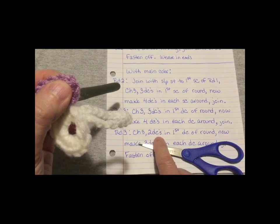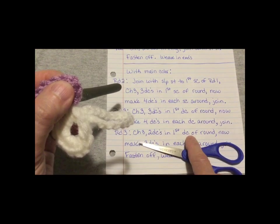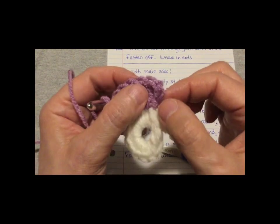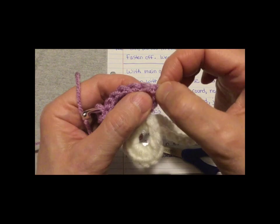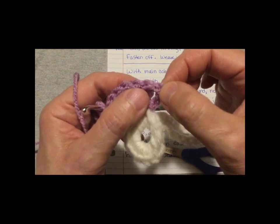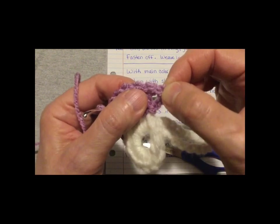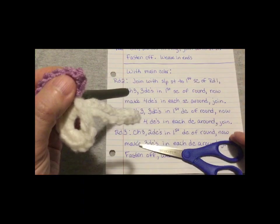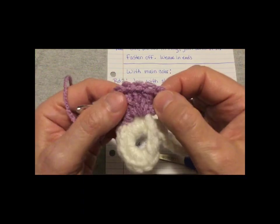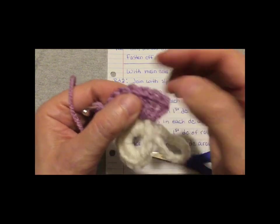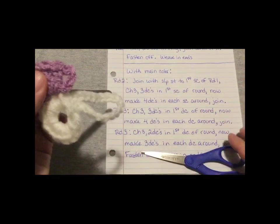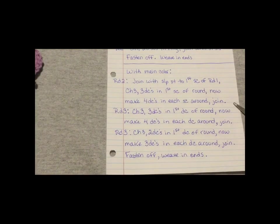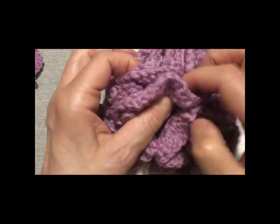So here's the chain three after you had joined in there. And you're going to do two double crochets in first double crochet of round. Like I said, this is considered the first double crochet of the round. You will do two more double crochets in this top of the chain three. And then after that, instead of four in each double crochet, you will be doing three. And then you're going to join, fasten off and weave in all the ends.